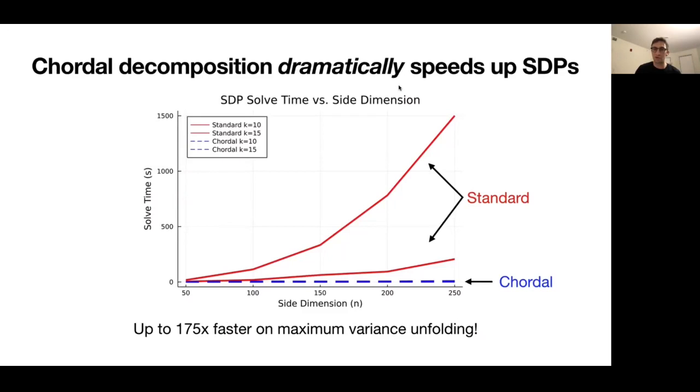So here's solving a standard version of this SDP, which is maximum variance unfolding, which is a dimensionality reduction technique versus the chordal version. And you can see that even for N in the low hundreds, the standard solve time can be 175x slower than the chordal solve time. And the chordal solve time looks entirely flat across from N is 50 to N is 250.